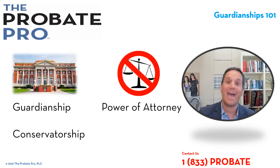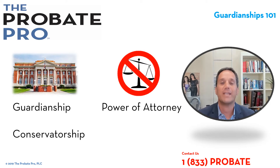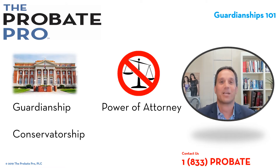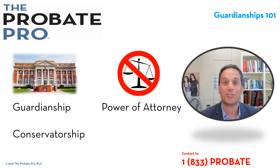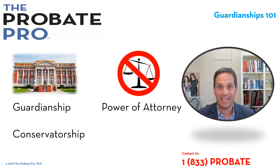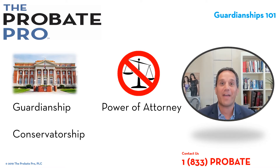Another fiduciary role is an attorney-in-fact, created through a power of attorney. To differentiate this from a guardianship or conservatorship, understand that they're created differently. An attorney-in-fact through a power of attorney is an estate planning document done when an individual has the capacity to plan for the future. A guardian and conservator, on the other hand, is generally established after the person lacks capacity, done through a court order. We urge you to plan ahead so you can control who your fiduciary will be.